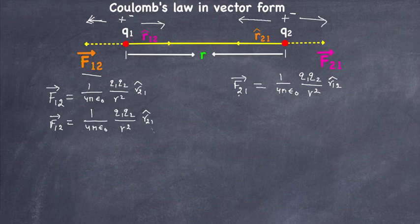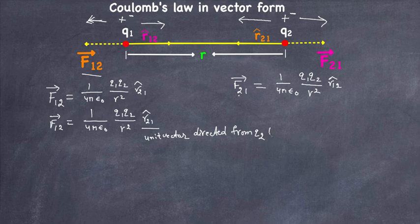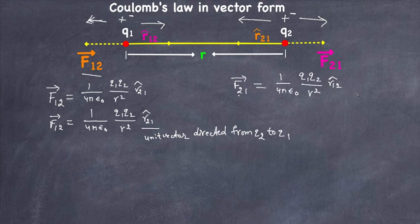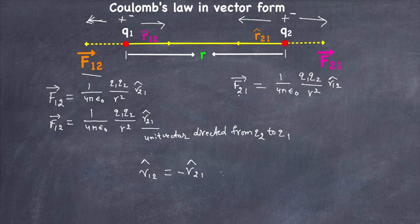Here, r̂21 is the unit vector directed from q2 to q1. Similarly, r̂12 is a unit vector directed from charge q1 to charge q2. Now, r̂12 and r̂21 are unit vectors — they are equal in magnitude but opposite in direction. We include this by introducing a negative sign, so that tells us both unit vectors are in opposite directions.